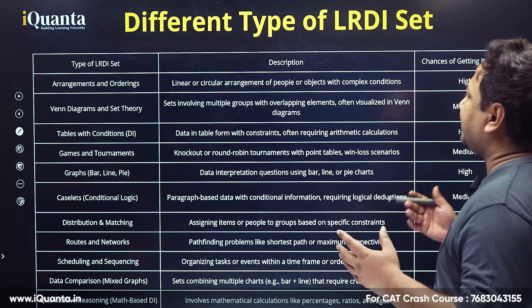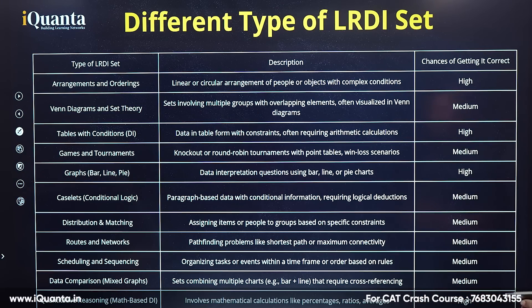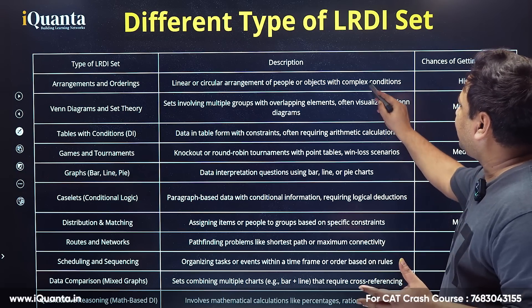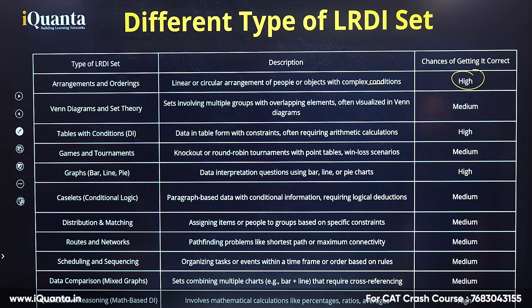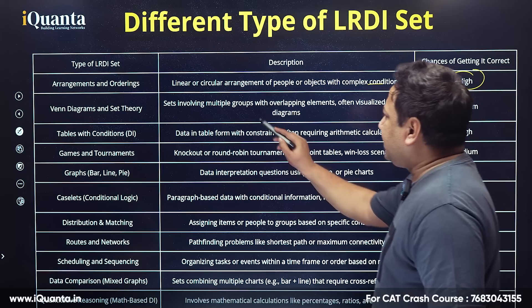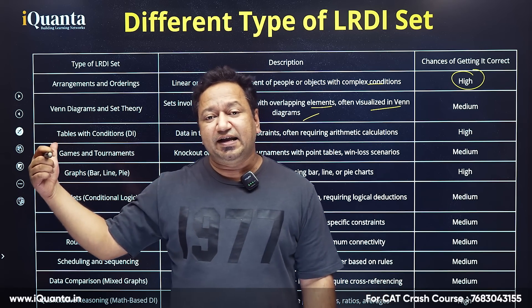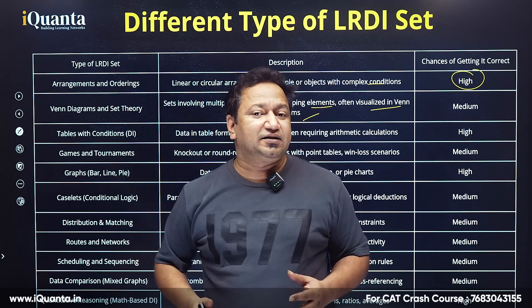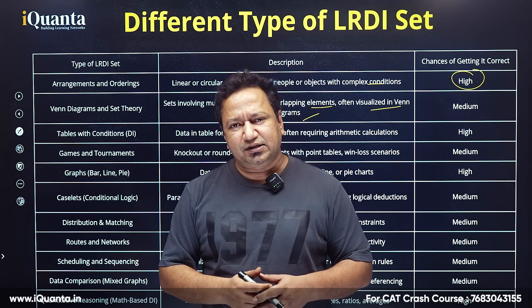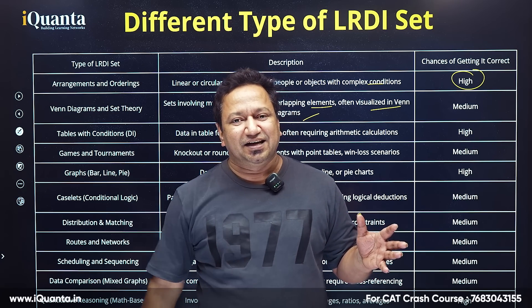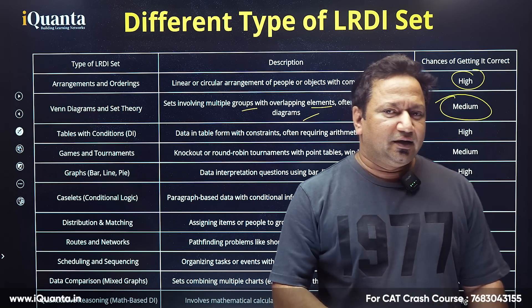Now, what types of LRDA sets are there, and what are the chances of getting them correct? First: arrangements and orderings — circular arrangements, linear arrangements of people or objects with complex conditions. Chances of getting it correct are very high because we are familiar with this. Second: Venn diagrams and set theory — multiple groups, overlapping elements, visualizing Venn diagrams. Even with high familiarity, there is Venn diagram optimization with maximum-minimum questions, so the chance of getting it correct is medium.